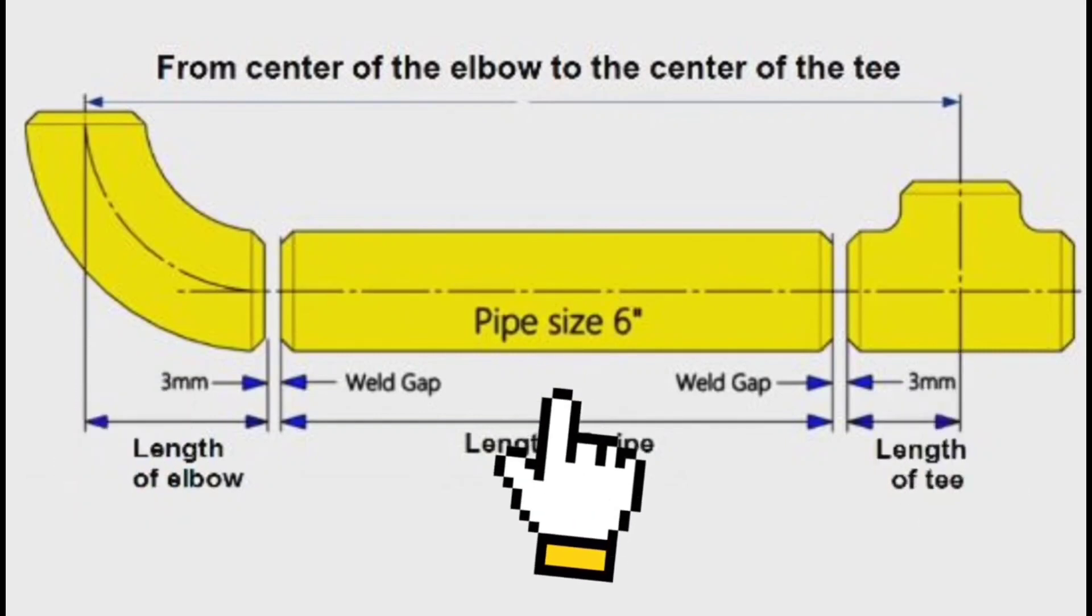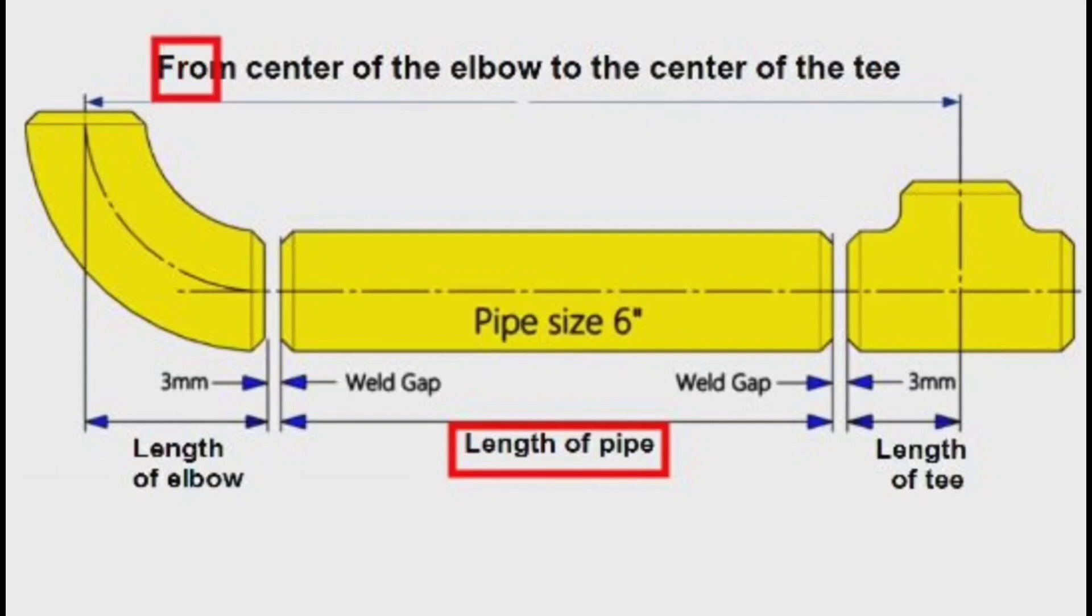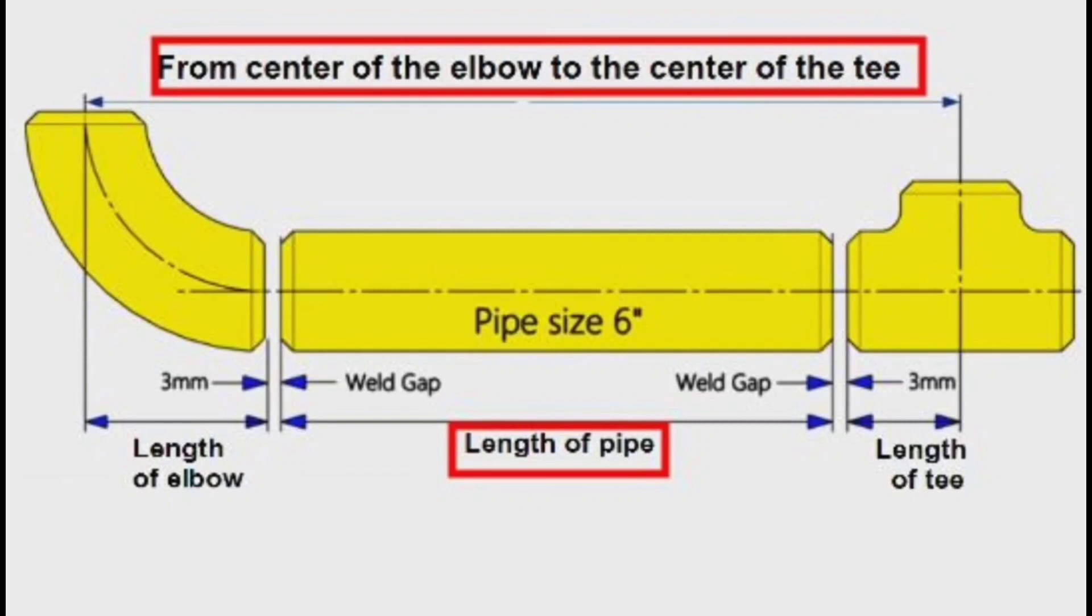We will find the length of pipe. This is the length of pipe which is used in this pipe section. This distance is from center of elbow to the center of the tee - in other words, this is the full length.